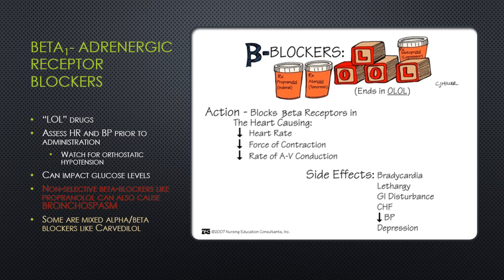There are also mixed alpha-beta drugs on the market. Drugs like carvedilol select for alpha-1, but are non-selective when it comes to beta receptors, and they also can cause bronchospasm. Side effects of beta blockers include bradycardia, altered mental status, GI disturbances, congestive heart failure from a lack of adequate pumping and cardiac output, hypotension, and depression.